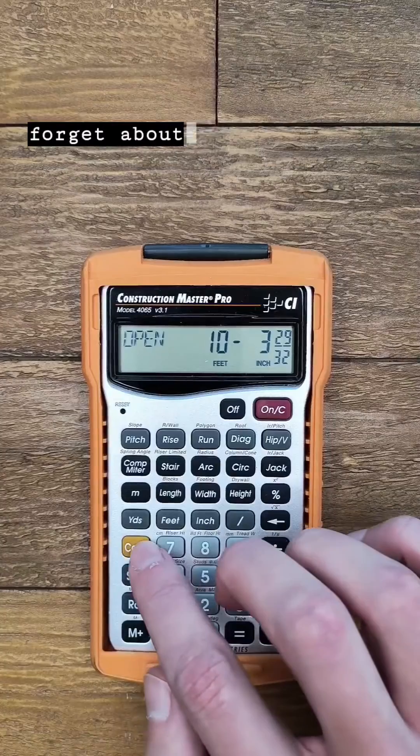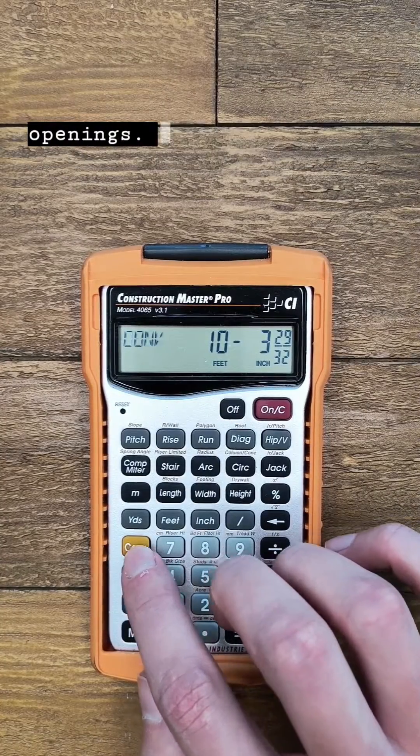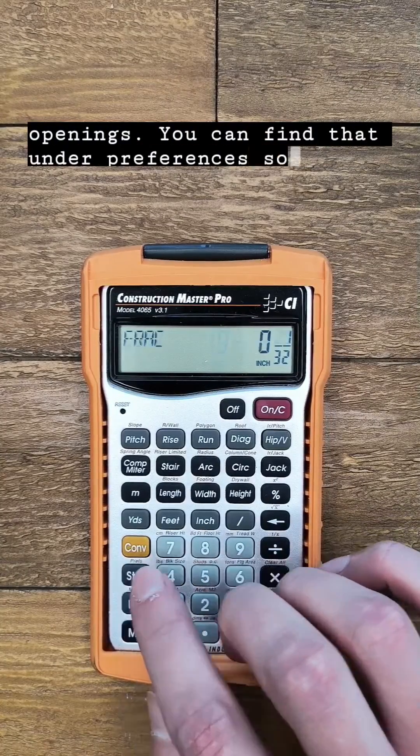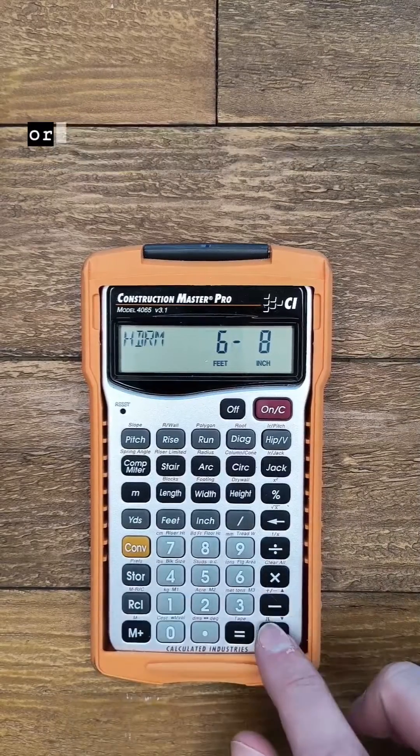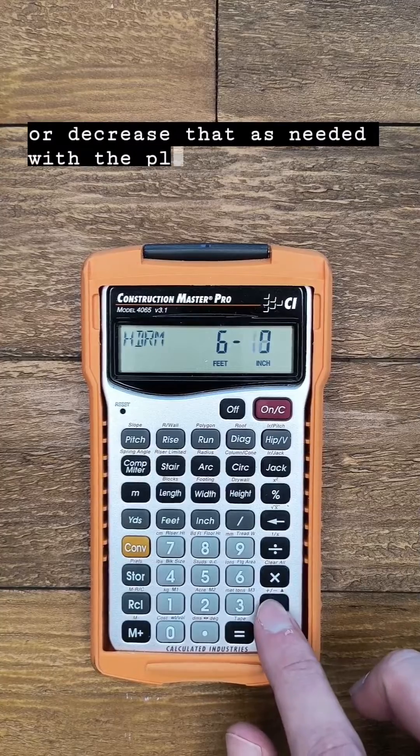And lastly don't forget about headroom which is also a factor in stairwell openings. You can find that under preferences, so push convert then store until headroom appears, and increase or decrease that as needed with the plus and minus keys.